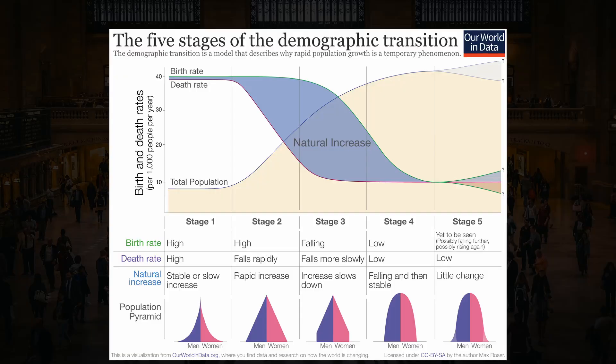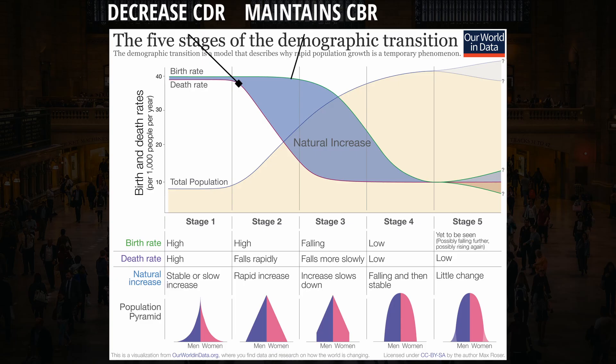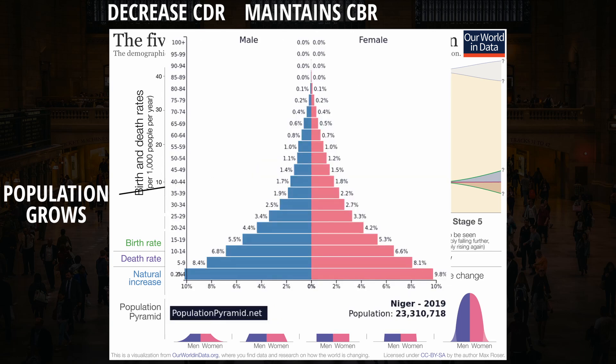As countries move into the second stage, their death rate starts to decrease due to increased healthcare, education, and infrastructure. At this point, they are able to prevent some infectious diseases like malaria, hepatitis, and tuberculosis with modern medicine and hospitals. Birth rates tend to stay high in these countries and women tend to have more traditional roles, so they have more children during their childbearing years and will have a high TFR. Since birth rates are high and death rates are decreasing, the natural increase rate will get larger and the population will grow. Countries like Niger are perfect examples of this stage.